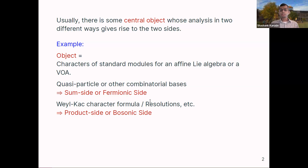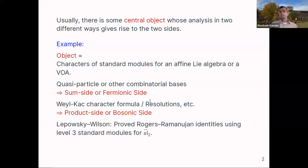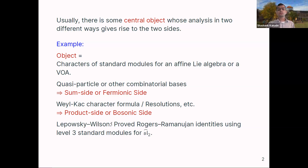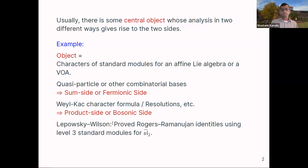About 45 years ago, Lepowski and Wilson did exactly this. They looked at level-three standard modules for SL(2)-hat and proved Rogers-Ramanujan identities completely using representation theory. People in this seminar should think of this as a very important moment in history, because in their proof they were the first ones on the mathematical side to discover the presence of vertex operators. They didn't yet have vertex operator algebras, but they independently discovered vertex operators with the aim of proving Rogers-Ramanujan identities. Vertex operator algebras existed in the physics literature, but these were the first in the math world.